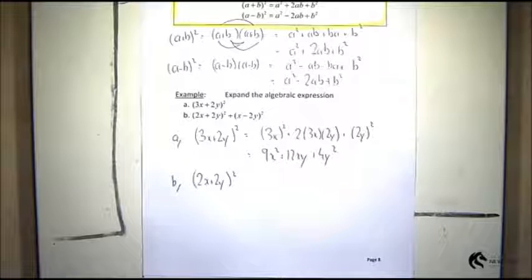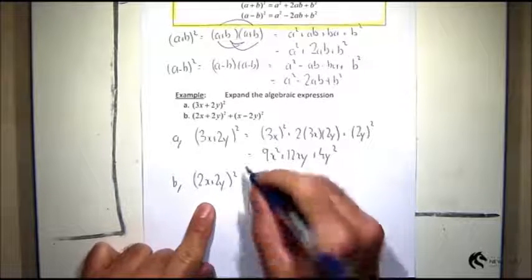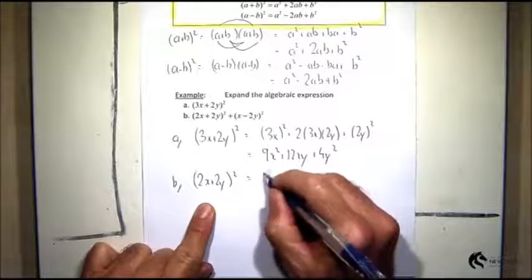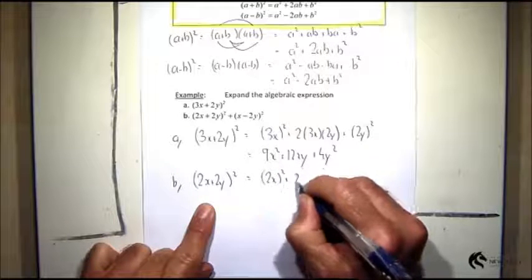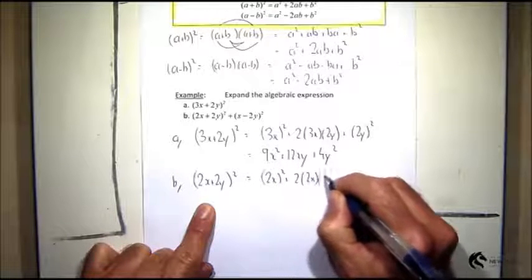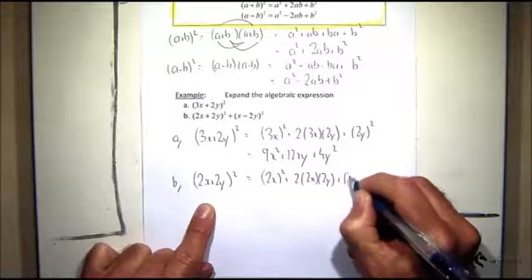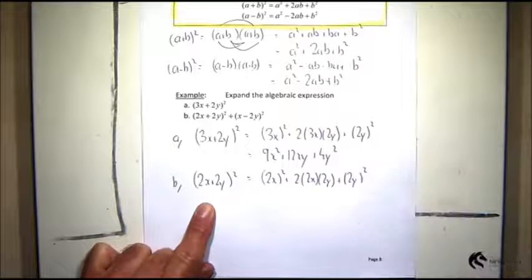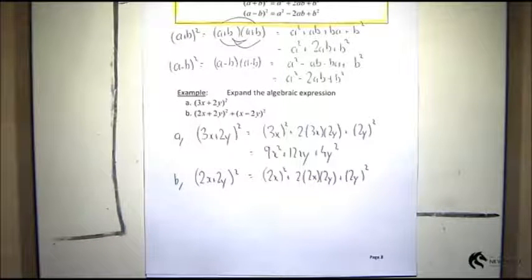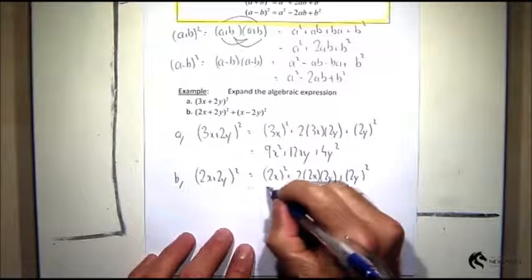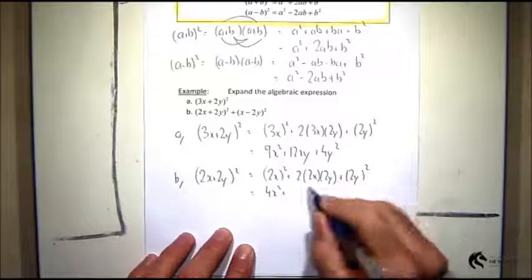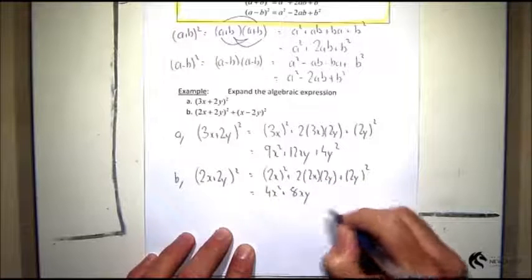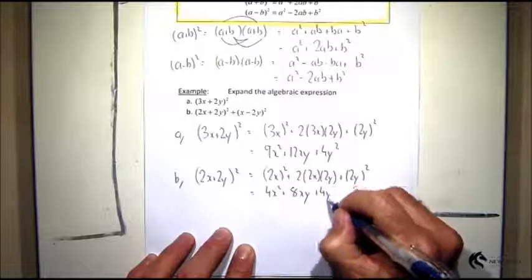So let's go (2x + 2y)² = (2x)² + 2 times 2x times 2y + (2y)². And in here I will get 4x² + 8xy + 4y².